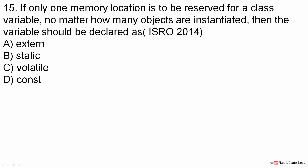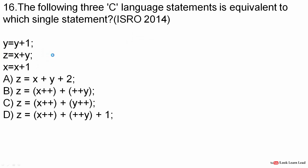Next question: if only one memory location is to be reserved for a class variable, no matter how many objects are instantiated, the variable should be declared as static. This is the definition of a static variable.